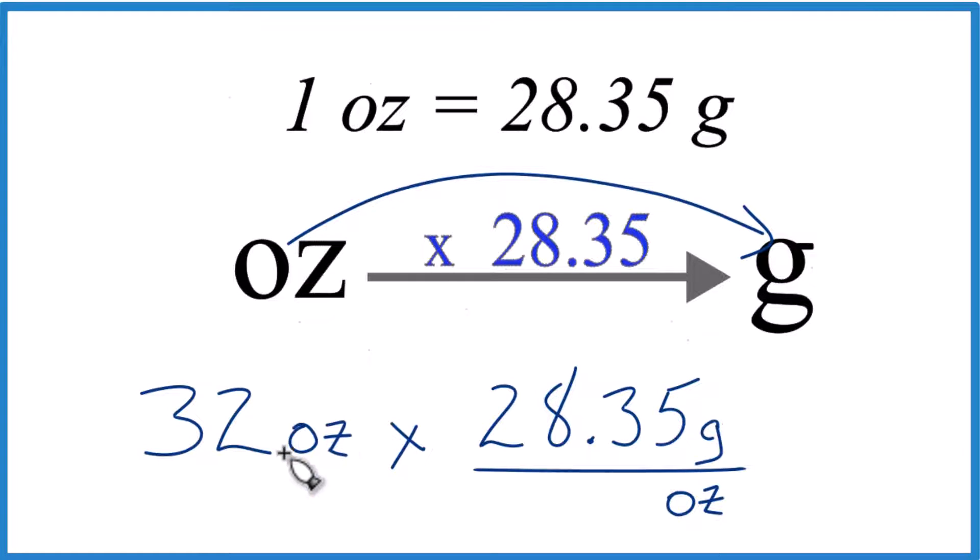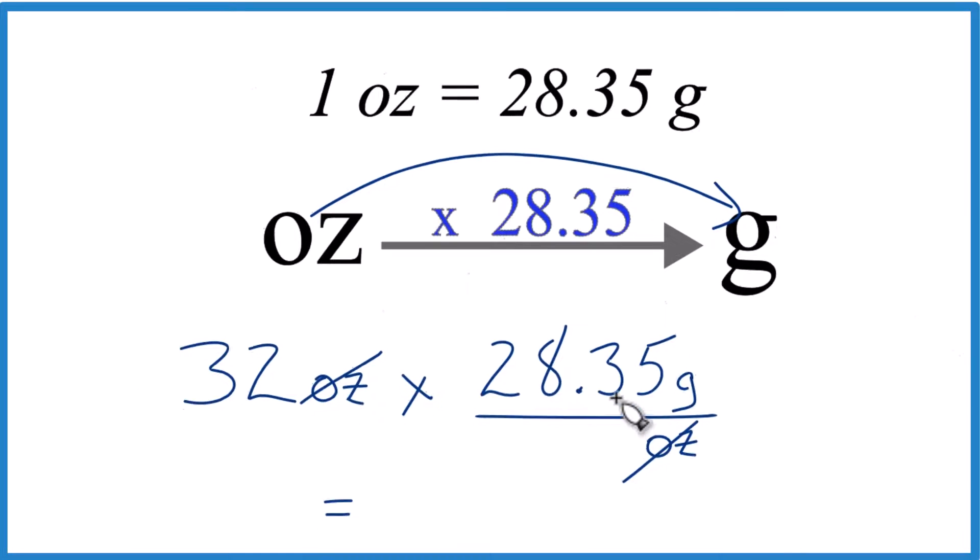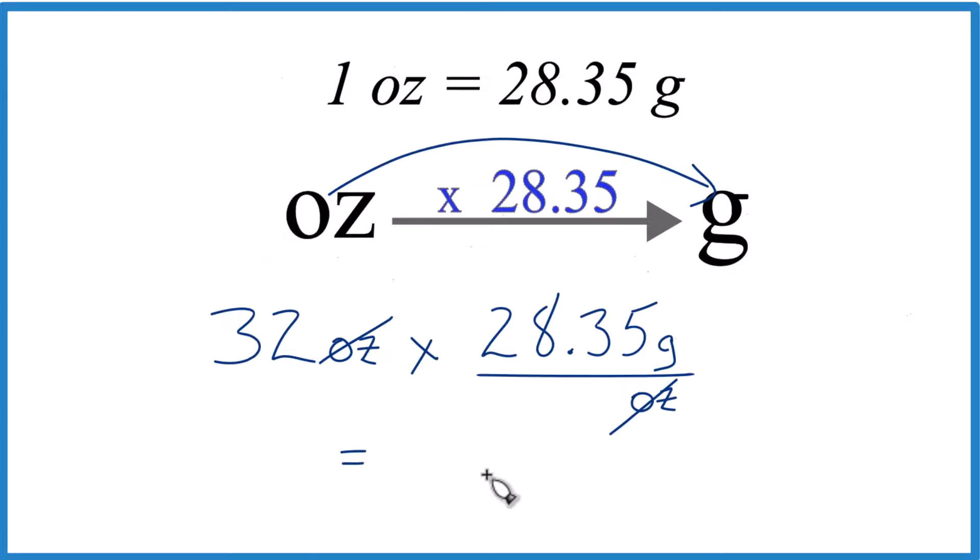And it's nice because we have ounces on the top and the bottom, they cancel out. And we're going to multiply 32 times 28.35 grams, and we get 907.2. And the units, that's going to be the grams, that's what's left there.